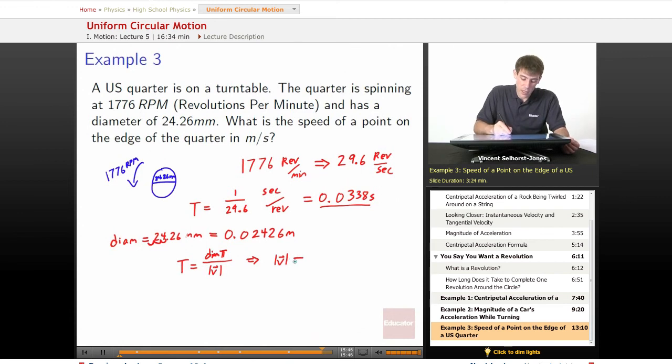Your speed is equal to your diameter, 0.02426 meters times pi. Once again, I'm omitting units just for speed and ease, but I encourage you to keep them. Divided by the time it takes.